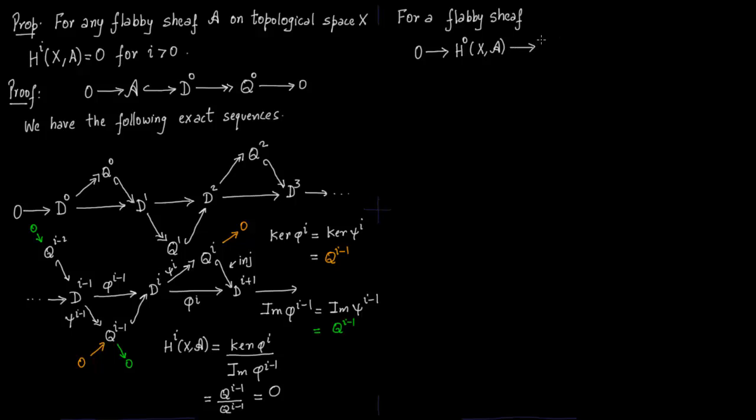We have an exact sequence in global sections. So this sequence is also exact. This is a short exact sequence because HI should be H1. So we have H0, H0, H0, then H1 and H1 of A is 0.